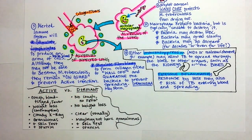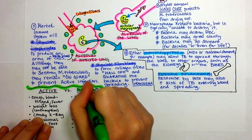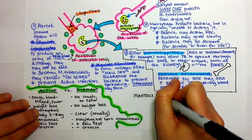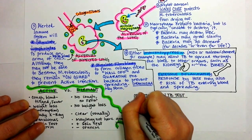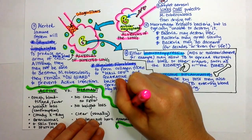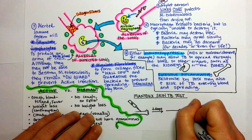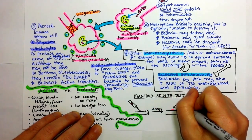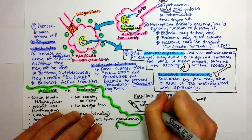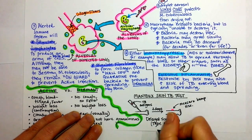Both active and dormant TB patients will have a positive TB skin test. Only the active TB patient will have a positive sputum test — meaning the tuberculosis is actually in their spit or in a sample from deep in their lungs. Since dormant TB is not contagious, you wouldn't expect to see any actual bacteria in the sputum.